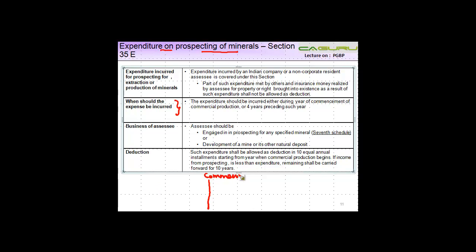So let's say you commence commercial production on a particular date - let's say commences on 31st May 2012. Any expenditure incurred either during the year of commencement of commercial production, so if you incurred here, let's say financial year 11-12.